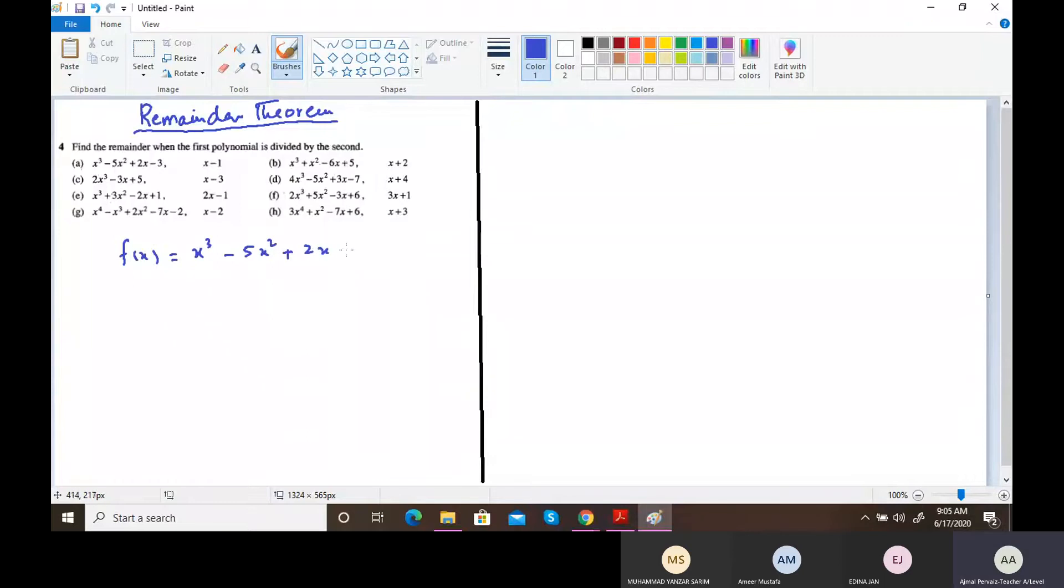And the second one which is x - 1, we'll put it equals to 0 and get the value of x. This value of x will be placed in this, just like we used to put the values in the functions. f(1) we will be finding, and I am telling you here that no need to do anything manually, you will just place the values and then put it in the calculator.